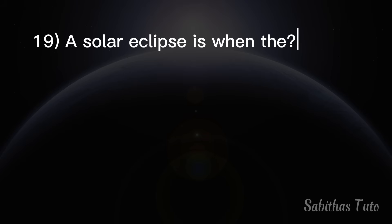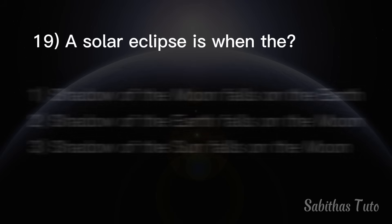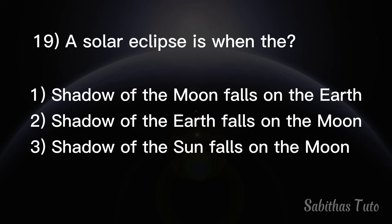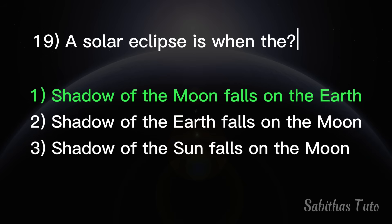Nineteenth question. A solar eclipse is when the shadow of the moon falls on the earth.